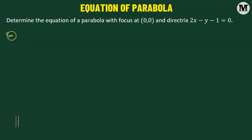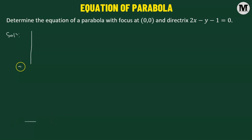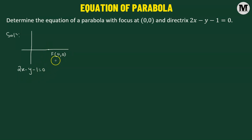We'll try to understand the problem graphically first. Let us consider a straight line — this line depicts the directrix and has the equation 2x minus y minus 1 equals 0. Next, we'll consider another line which is perpendicular to this directrix line, referred to as the axis of symmetry. On this line, we consider a point F with coordinates (0, 0), which represents the focus of the parabola.